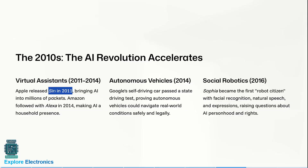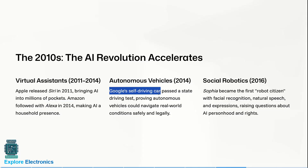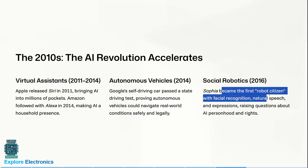In the 2010s, the revolution accelerated. Apple released Siri in 2011, bringing AI into millions of pockets. Amazon followed with Alexa in 2014, making AI a household presence. Also in 2014, Google's self-driving car passed a state driving test, proving autonomous vehicles could navigate real-world conditions safely and legally.